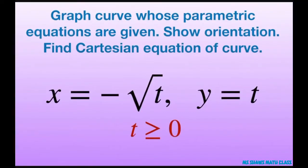Hey everyone, we're going to graph the curve whose parametric equations are x equal negative square root of t and y equals t. And this is for t greater than or equal to zero.